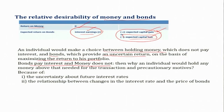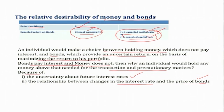The question is: since bonds pay interest and money doesn't, why would an individual hold any money above that needed for the transaction and precautionary motives? Prior to the concept of speculative motive being introduced, mainly two motives were discussed — transaction and precautionary motive. The answer given by Keynes was: because of uncertainty about future interest rates, and the inverse relationship between changes in interest rate and the price of bonds, this uncertainty leads to speculative demand for money above what is needed for transaction and precautionary motives.